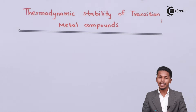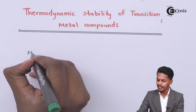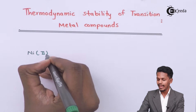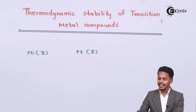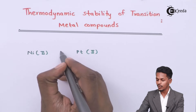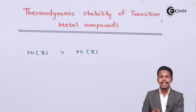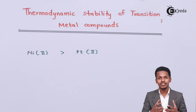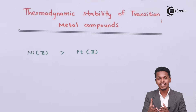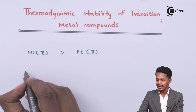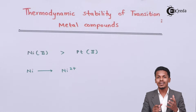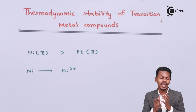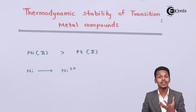Suppose we are talking about compounds like nickel(II) and comparing it with platinum(II). It has been found that nickel(II) compounds are more thermodynamically stable compared to platinum(II). The reason is that if a lesser amount of energy — that is, a lower ionization enthalpy — is required to convert a particular atom to its respective ion, then the compound is more stable in nature.